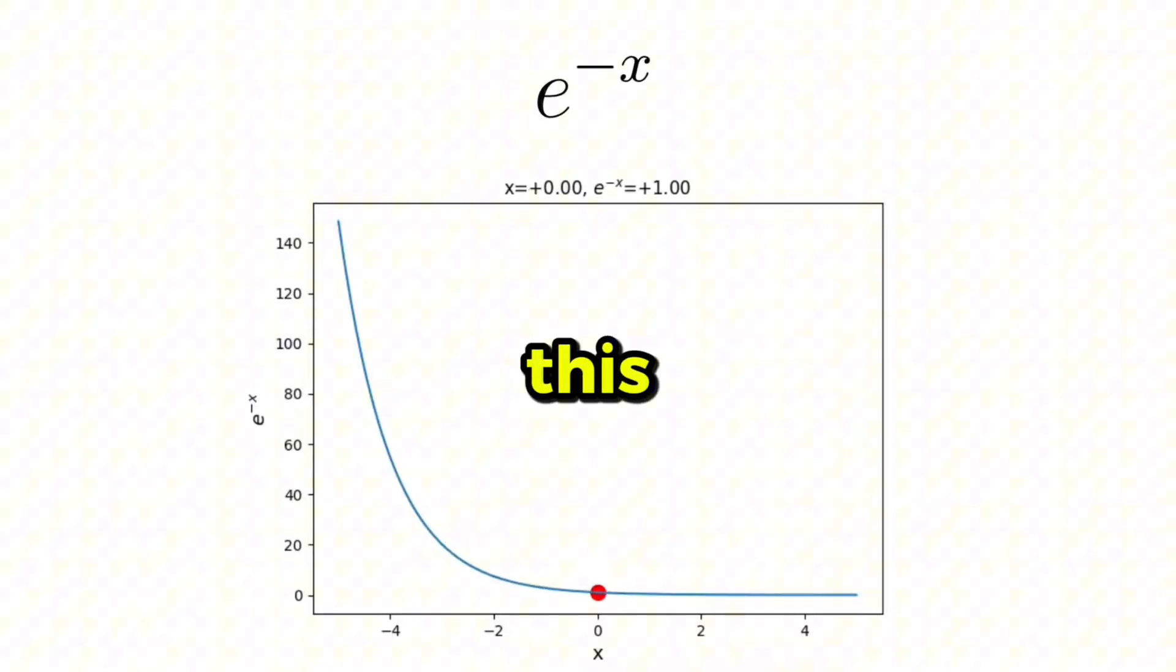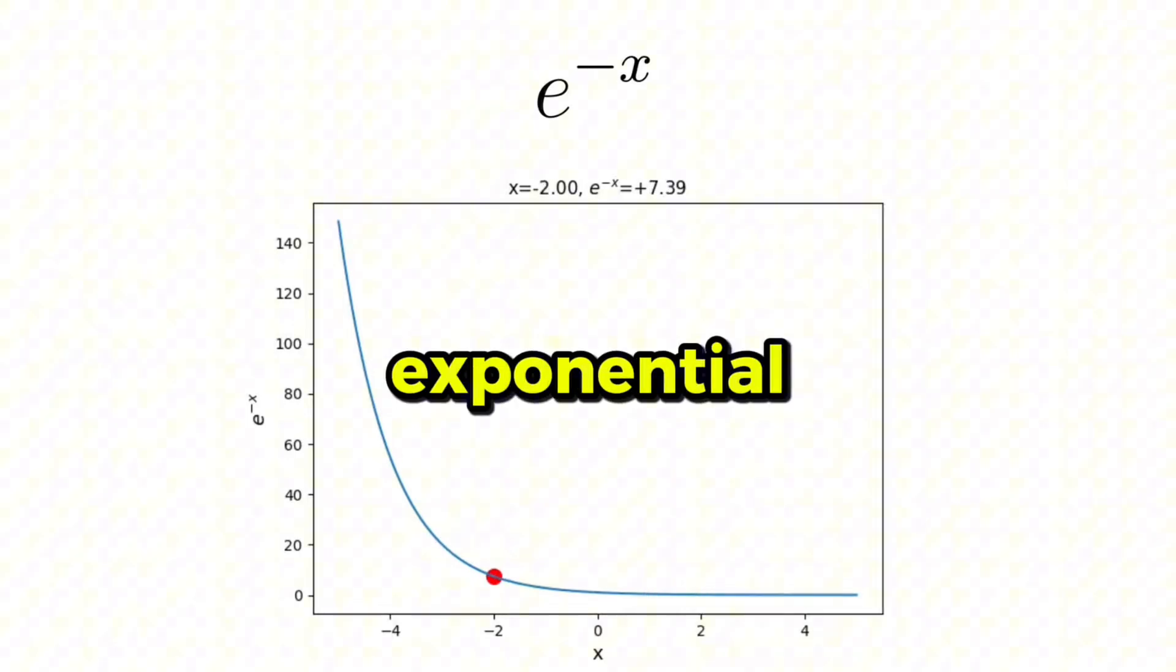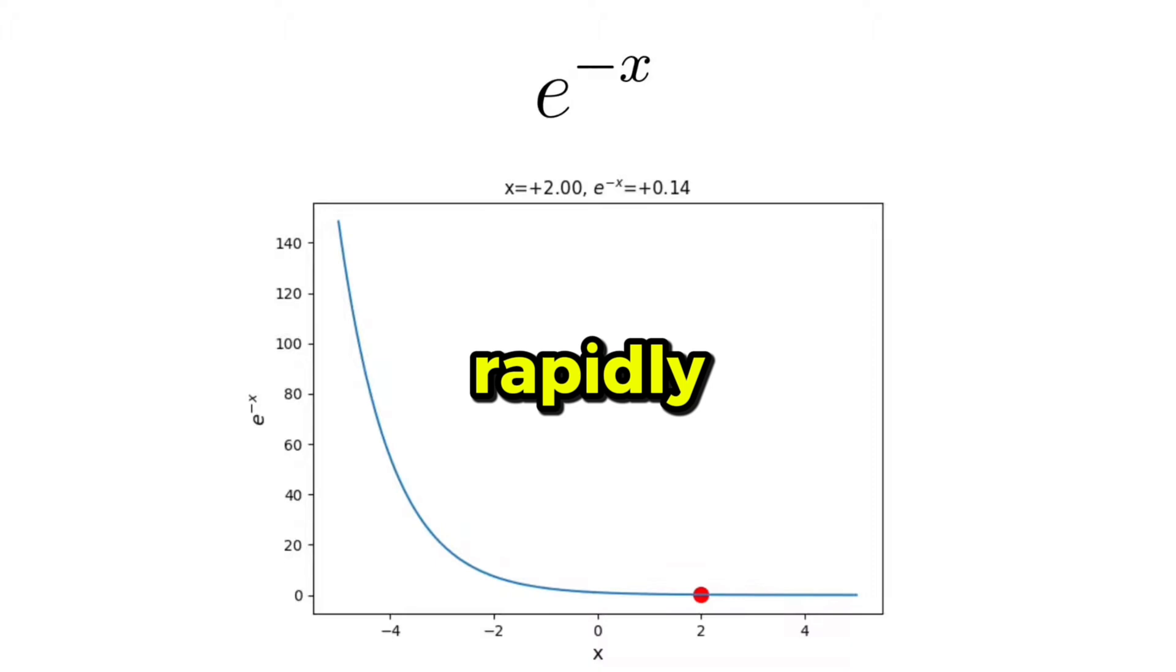One interesting thing that we can do with this function is to reverse the sign of the input. If we do that, then the exponential function will decrease very rapidly on the negative side and will approach zero as the input approaches infinity on the positive side.